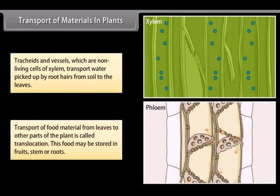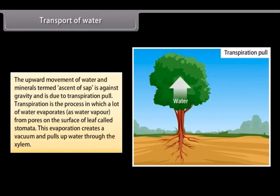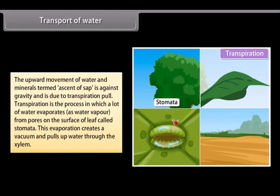Transport of food material from leaves to other parts of the plant is called translocation. This food may be stored in fruits, stem or roots. Transport of water. The upward movement of water and minerals termed ascent of sap is against gravity and is due to transpiration pull. Transpiration is the process in which a lot of water evaporates as water vapour from pores on the surface of leaf called stomata. This evaporation creates a vacuum and pulls up water through the xylem.